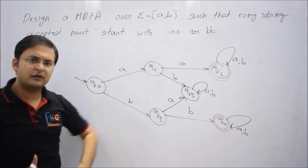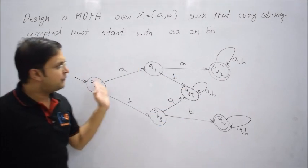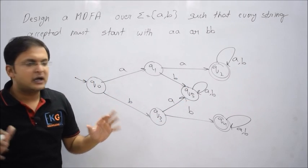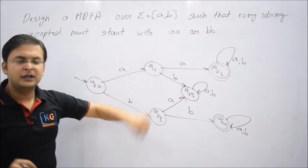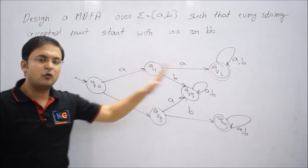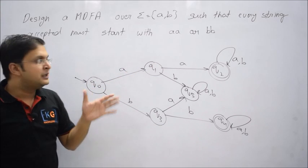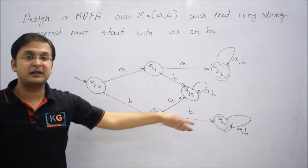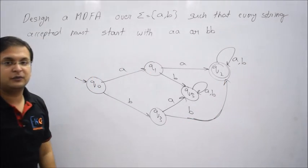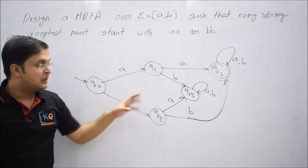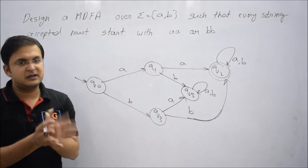This machine has two final states, but I have a self-loop on each final state. A self-loop on a final state means once you reach there, no matter what comes next, the string will be accepted. So you don't need to remember whether you were accepted because of 'aa' or 'bb'. What I can do is merge the two final states: remove q4 and use q2 as the single final state, since both had self-loops. That is a small but useful trick.